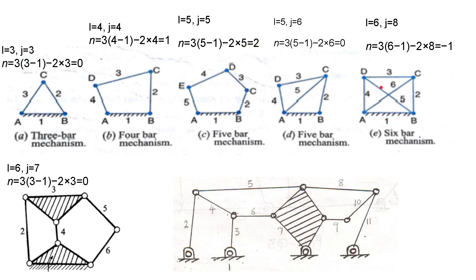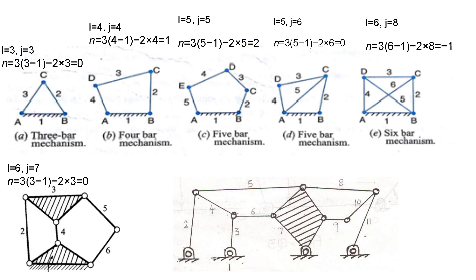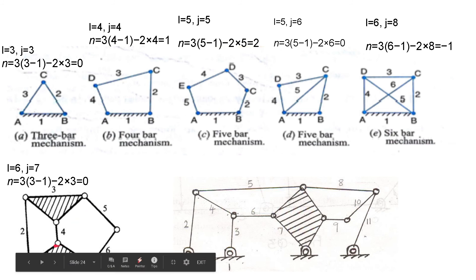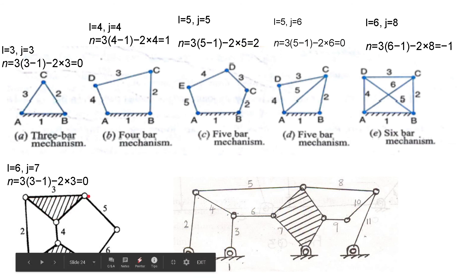For a six-bar mechanism — a complex mechanism from a competitive exam question — there are six links and seven lower pairs. Don't count a triangular solid link as three different links; it is a single link. With these values, degrees of freedom come out to zero, so this is also not a useful structure.